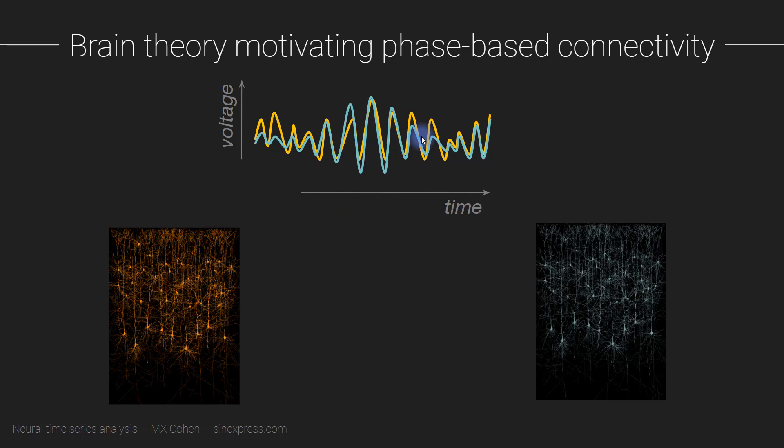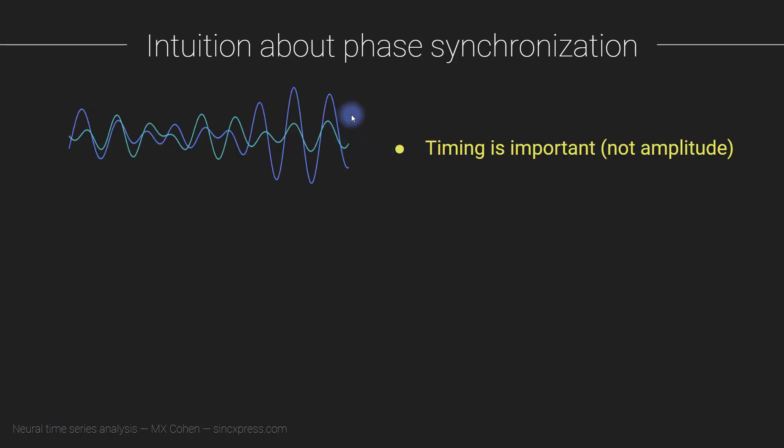Okay, so that's enough of brain theory. What I want to do now is build a little bit of intuition for phase synchronization in general. So one important thing to understand about phase synchronization is that we care about the timing, not about the amplitude. So in these two time series with these two signals, this window of time here reflects strong synchronization because the two groups of cells, or these two time series, are going up and down together. The phases are consistent between these two. So when we are computing phase synchronization, we will be ignoring the amplitude values altogether and only focusing on the phase angle time series.